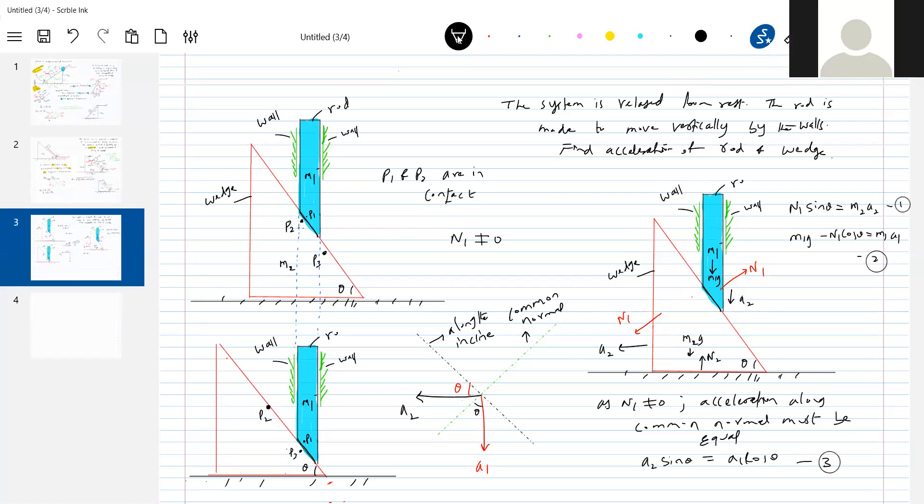So, once, can you repeat the last statement? Acceleration along common normal must be equal because normal reaction is 0? No. Normal reaction is non-zero. N1 is non-zero. So there is a common normal. A2 cos theta is not equal to A1 sin theta because there is a relative motion along the incline. Perpendicular incline, there is no relative motion. So therefore the accelerations must be equal.